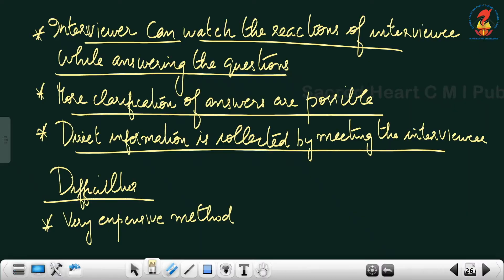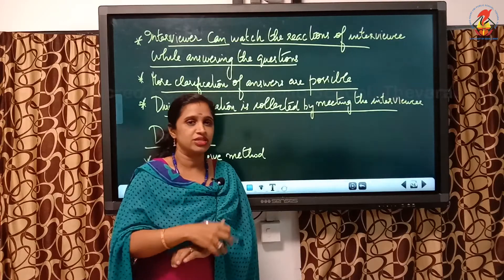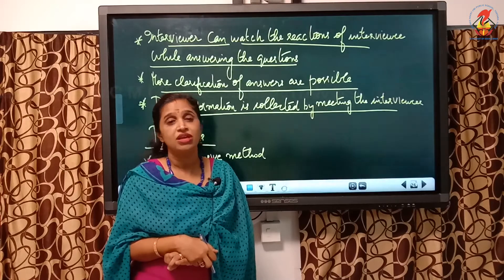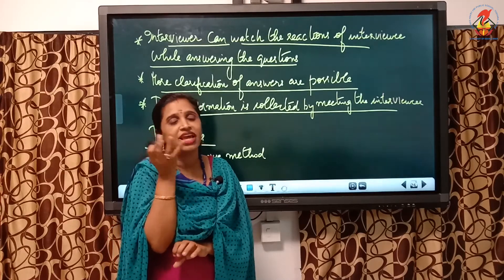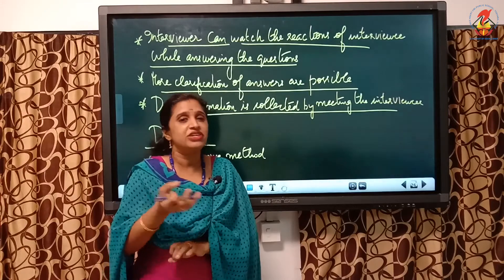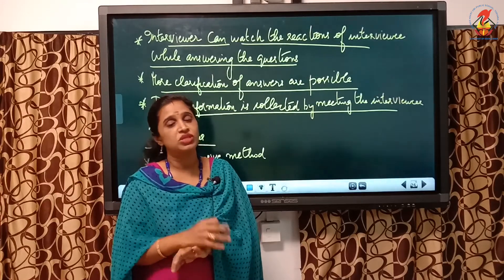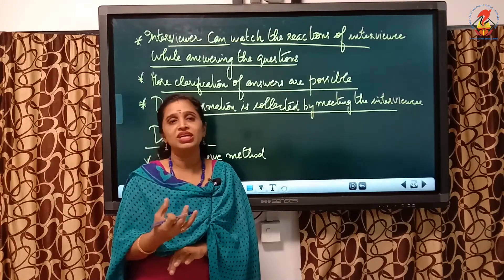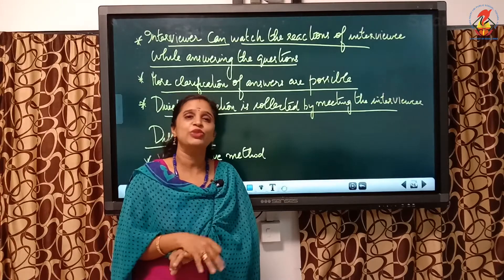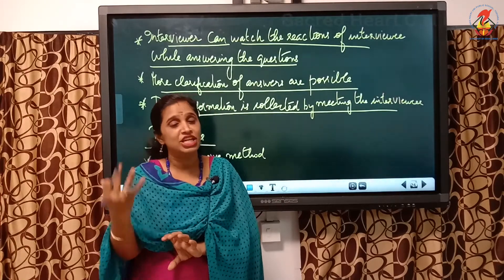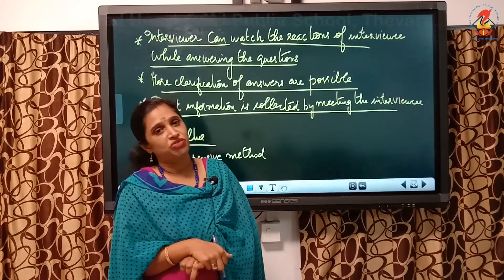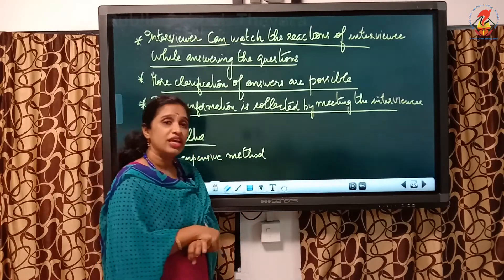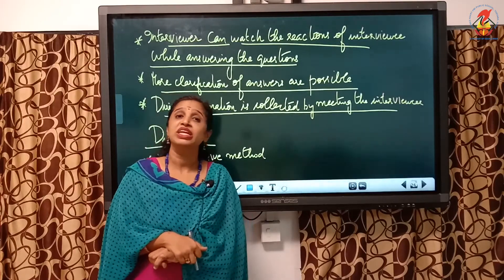The next feature is that direct information is collected by meeting the interviewee. It is a face-to-face interaction, so direct information can be collected which is more clear and precise — a first-hand information more effective than any other method. The interviewer can ask the interviewee to explain unclear answers or give responses in an explanatory manner.